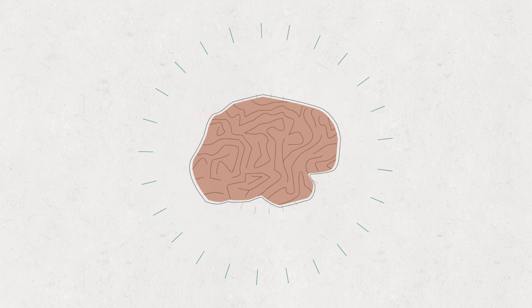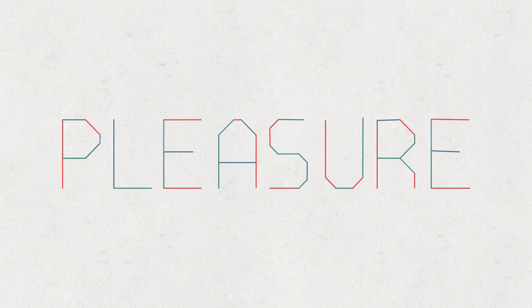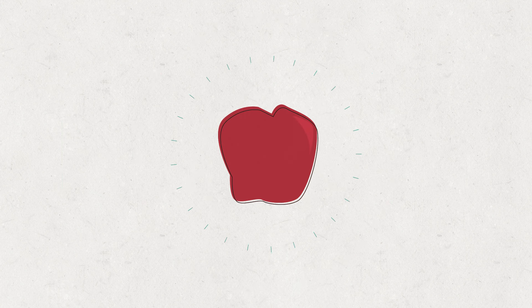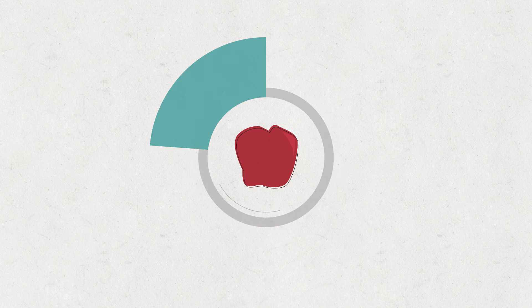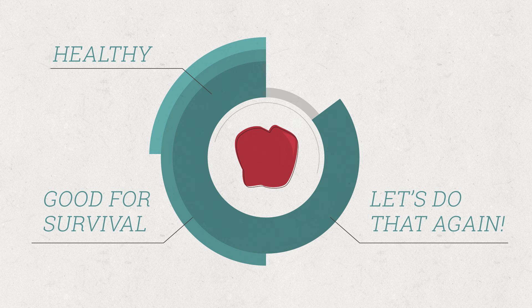Whenever the brain recognizes something that's good, it releases a chemical called dopamine. Dopamine causes you to experience pleasure. It's what makes you feel good, like when biting into an apple. The brain releases this dopamine in order to teach the body that this is healthy and good for your survival, and that it should remember to do it again.